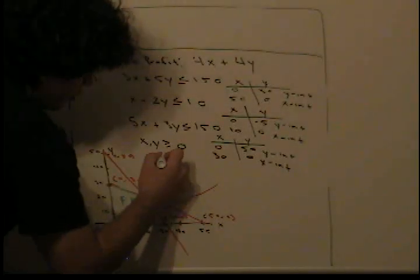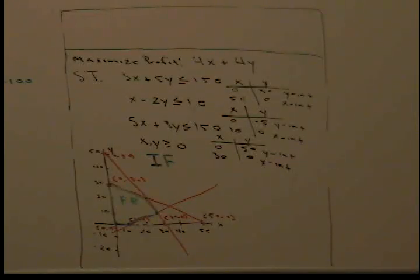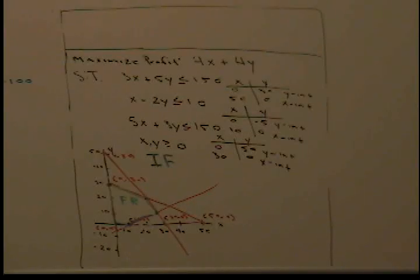Everything outside the feasible region is called the infeasible region, denoted by IF. I'm going to continue this in Part 2, so scroll down to Part 2 to see the rest of the video.